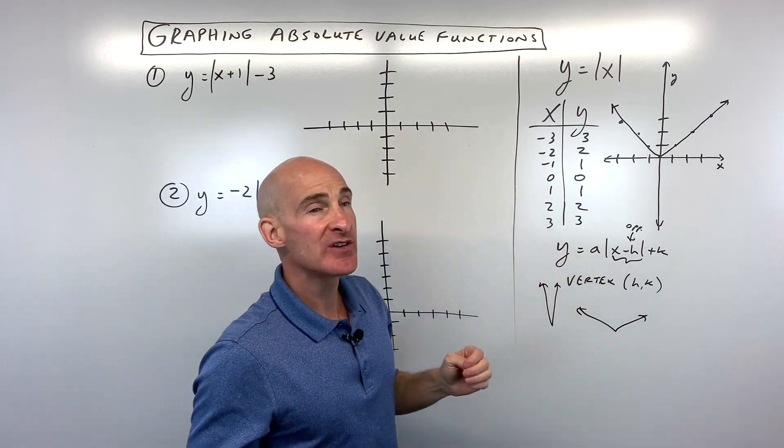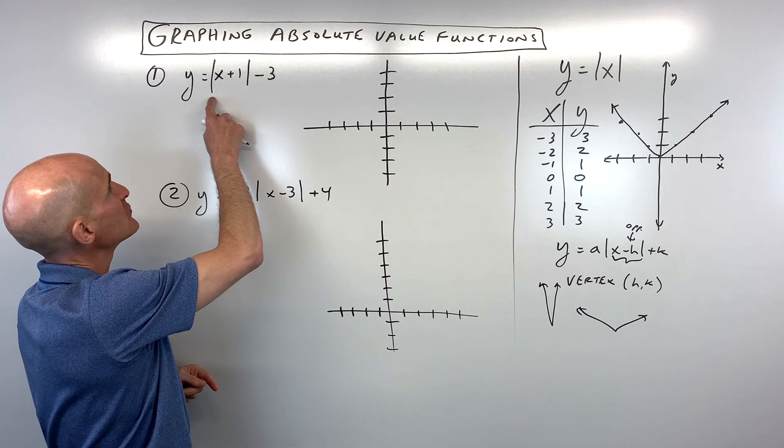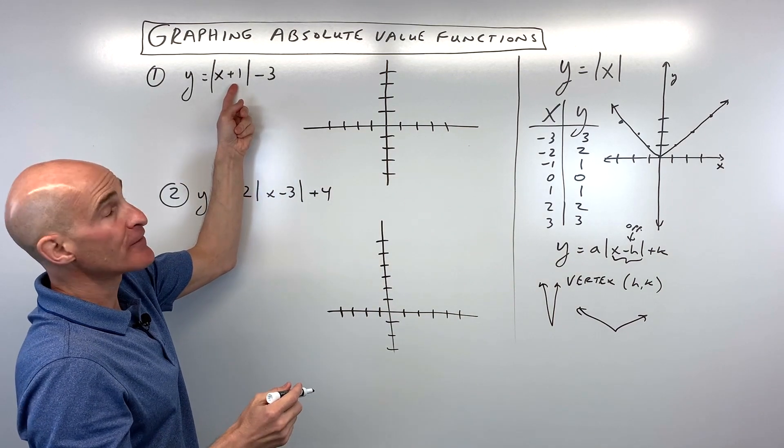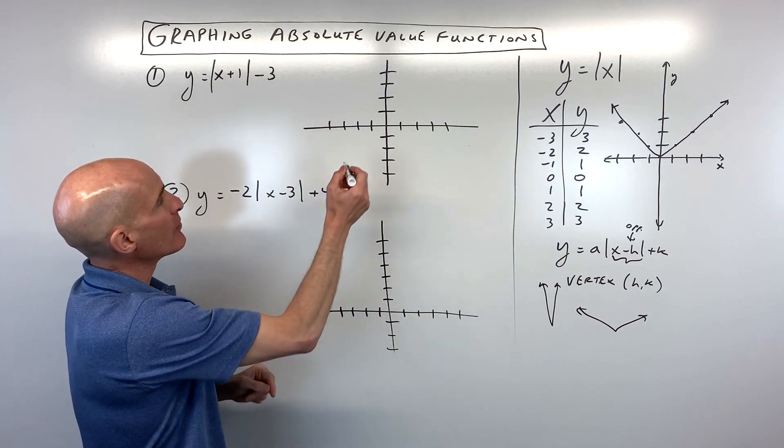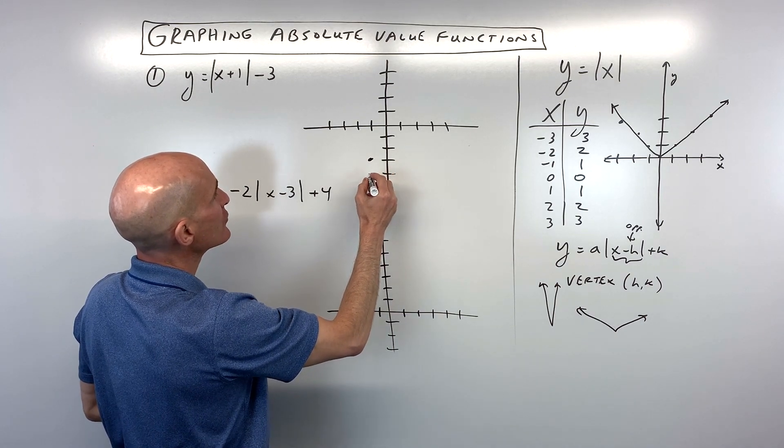So let's jump into the three examples and let's practice. So for number one, we have y equals the absolute value of x plus one minus three. So the first thing I like to do is I like to find that vertex, that point where the graph bends. And this is going to shift left one and down three. So left one, down three, so you're going to be right there. That's your vertex.